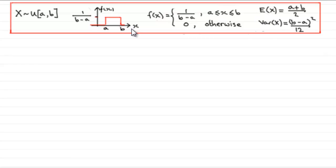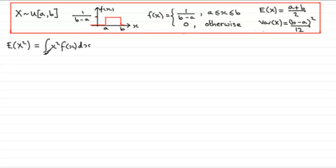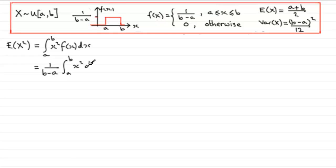We need to work out first of all what E of x squared is going to be. E of x squared is equal to the integral of x squared times f of x integrated with respect to x, and our limits go from a to b. We know what f of x is when x is between a and b — it's the constant value 1 over b minus a — so we can put it outside the integral, giving 1 over b minus a times the integral from a to b of x squared dx.